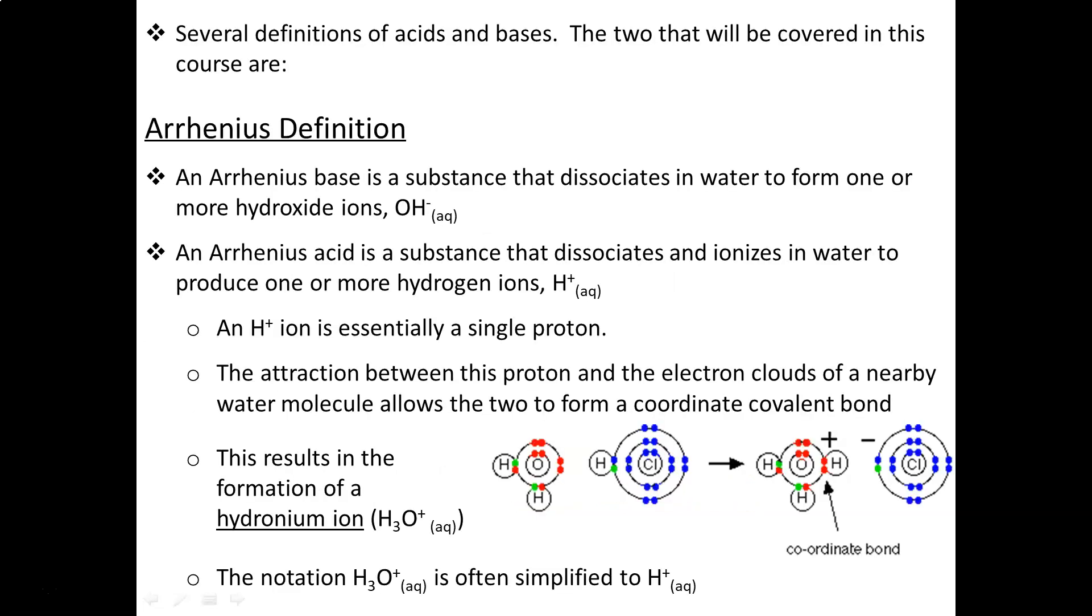When it comes to acids and bases there are many definitions, however this year we will be covering two of them: the Arrhenius definition and the Bronsted-Lowry definition. You probably learned the Arrhenius definition first, simply because it's one of the easier ones to understand. According to Arrhenius, a base is a substance that dissociates in water to form one or more hydroxide ions.